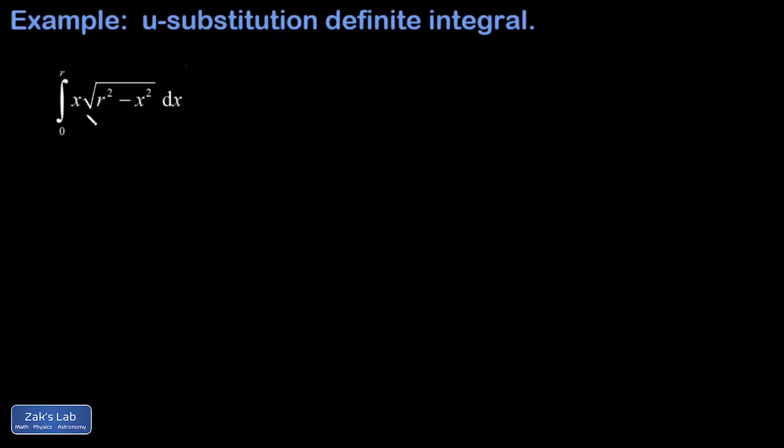In this video we're doing a definite integral of x square root r squared minus x squared where r is assumed to be a constant. I'm going to opt for an explicit substitution this time because I want to transform the limits of integration and evaluate it that way. What I noticed right from the beginning is I basically have the derivative of the inside of that square root sitting right next to it.